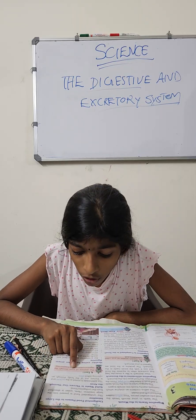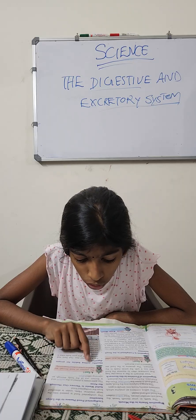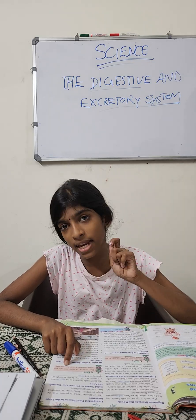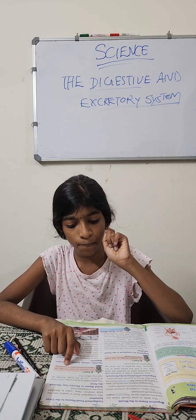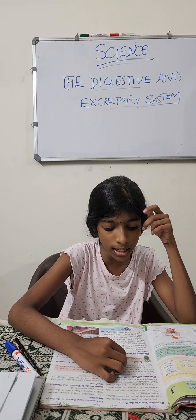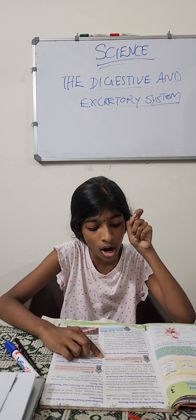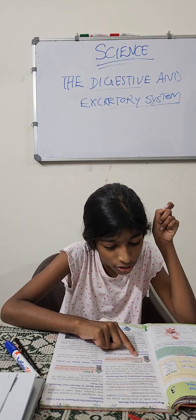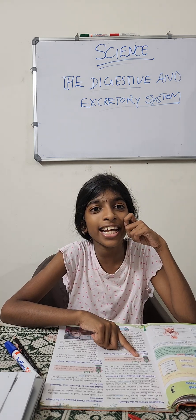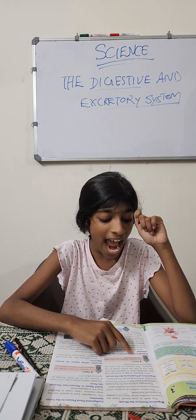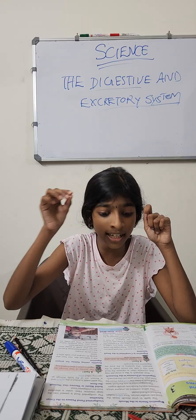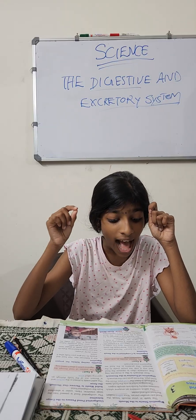The journey of food through the digestive system is about 9 meters long. The stomach creates an acid called hydrochloric acid.